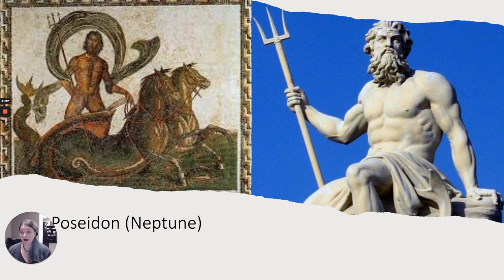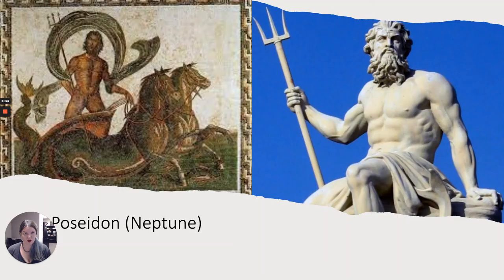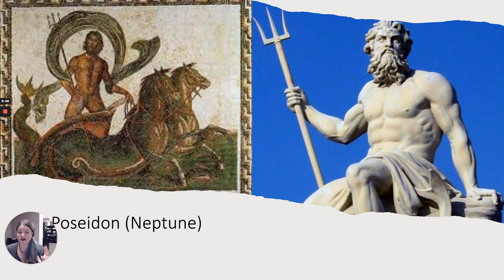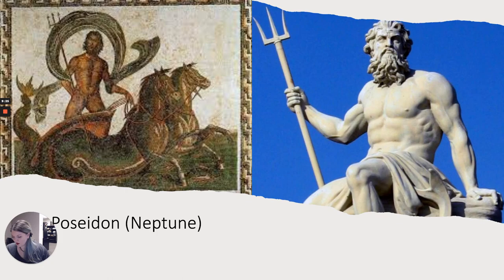Then we have Poseidon, whose Roman name is Neptune. Poseidon and Zeus are brothers — they have a third brother we'll talk about later, but I'm starting with the Olympians, the gods that live on Mount Olympus. Poseidon looks kind of similar to Zeus — they both have the beard thing going on, and they're super buff. He's often shown with his hippocampus, the horse-whale creatures that pull him around in his chariot in the sea. He also often has his trident — that big fork he's holding. He is the god of the sea, overseeing all the water and ocean.